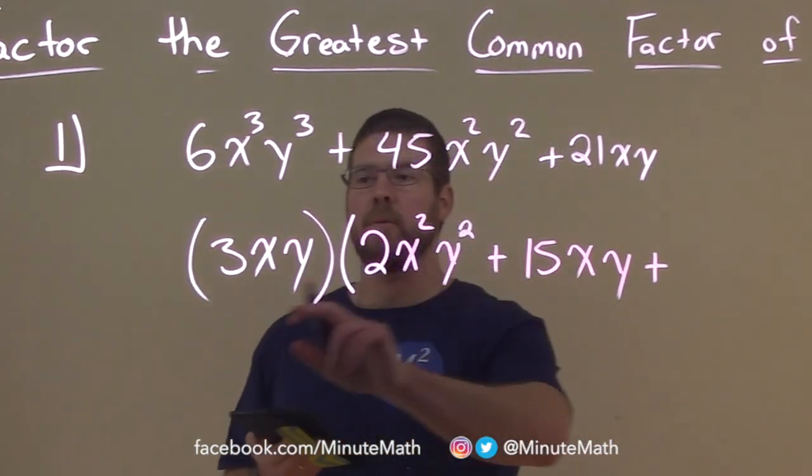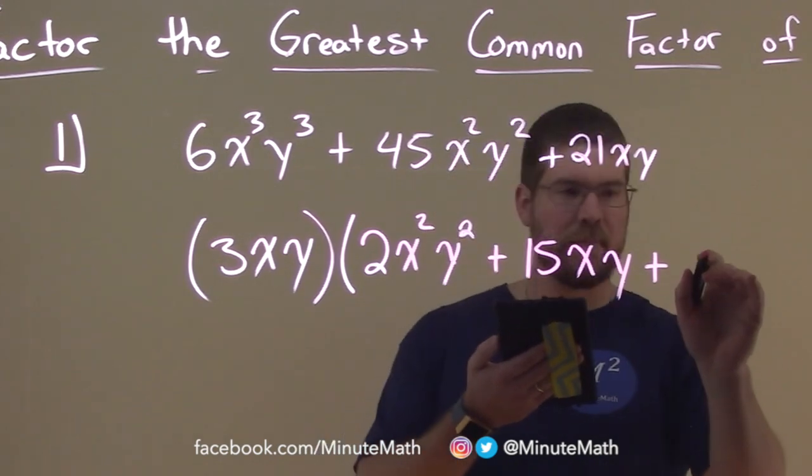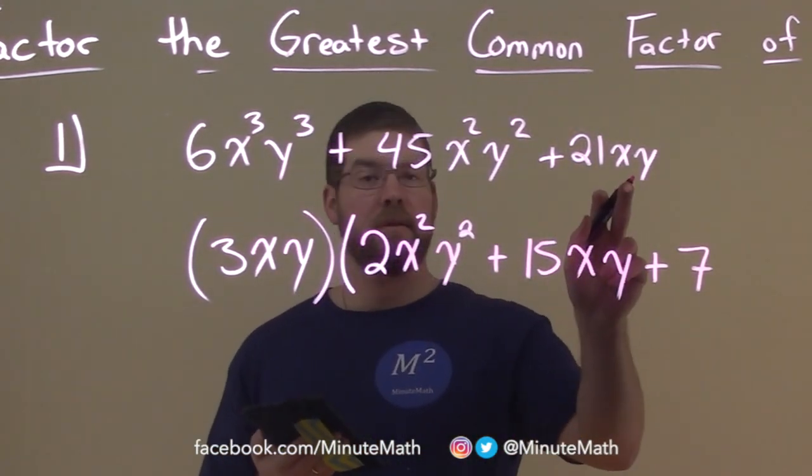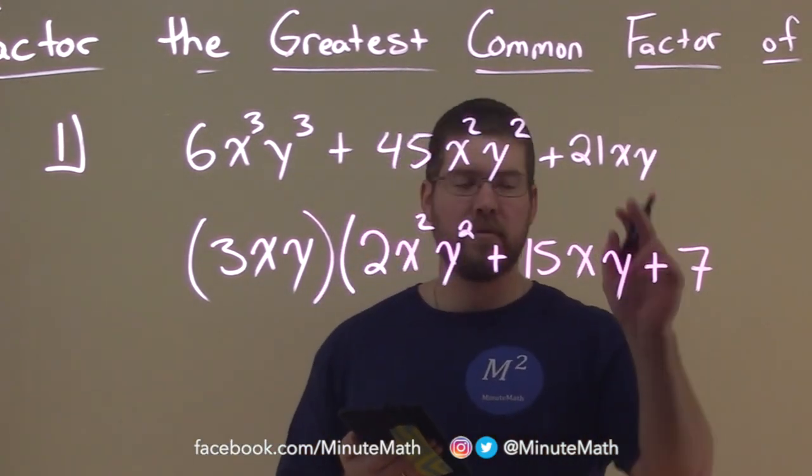Lastly, we have 21. We pulled out 3, leaving 7. We pulled out x, leaving no x's left over. Pulled out y, leaving no y's left over.